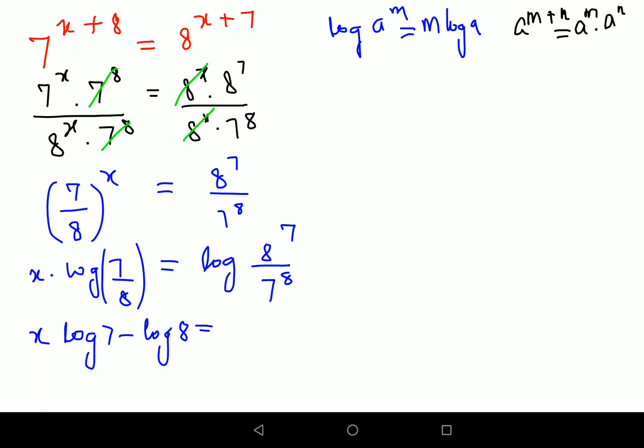Similarly here I can write this as log of 8 raised to 7, so I can write the index ahead: 7 log 8 minus denominator, which can be written as 8 log 7.